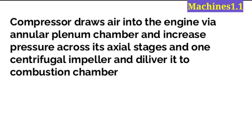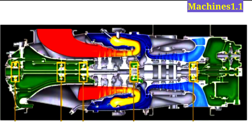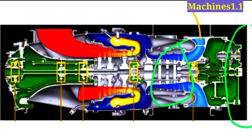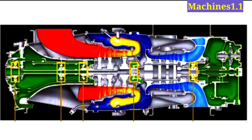The compressor draws air into the engine via an annular plenum chamber and increases pressure across its axial stages and one centrifugal impeller, then delivers it to the combustion chamber. The starter generator, installed on the AGB, helps rotate the compressor. The compressor then sucks air in from the engine inlet, and this air goes directly toward the combustion chamber — this is the initial stage before the engine is started.